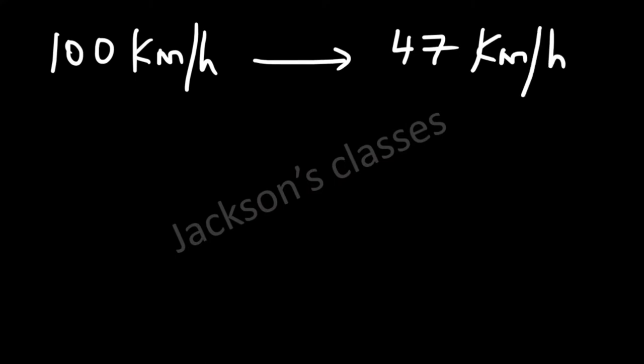Now in this question, it's given that the salesperson reduced his speed from 100 km per hour to 47 km per hour. So the reduction over here in km per hour would be 100 minus 47, which is 53 km per hour.